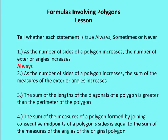Number two: as the number of sides of a polygon increases, the sum of the measures of the exterior angles increases. That's never true. Remember, the sum of the measures of the exterior angles is always equal to 360 degrees, so it doesn't matter if the sides increase — the measure of the exterior angles is always going to be 360 degrees.